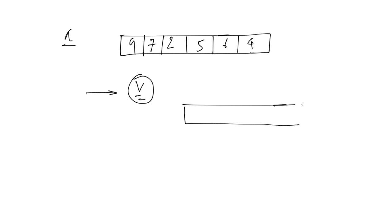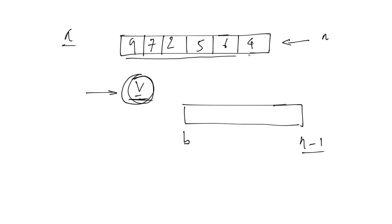We'll take a variable V where at any instant our target is we should hold the largest element, and we'll take an array B. If the size of array A is n, we'll take array B and its size should be n minus 1. We should hold the largest element and all the rest of the elements of array A should be copied into array B. We'll take value 9 in V.